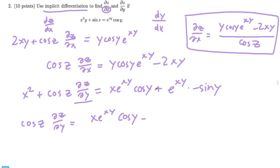And then let's distribute the negative minus x squared. And then we just divide both sides by cosine z to get our partial.